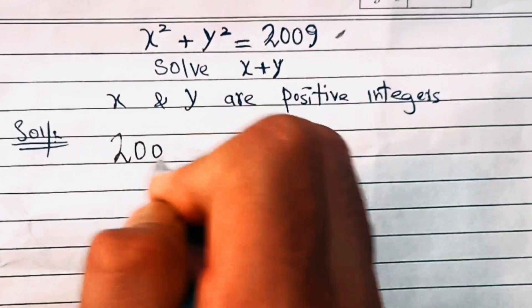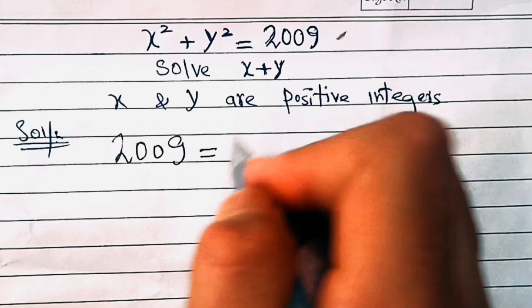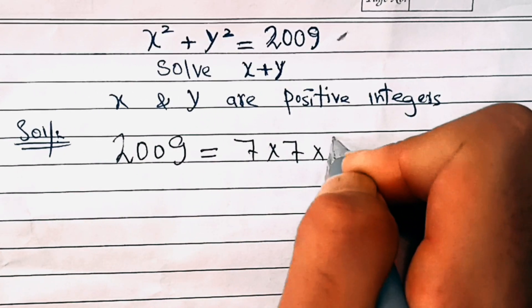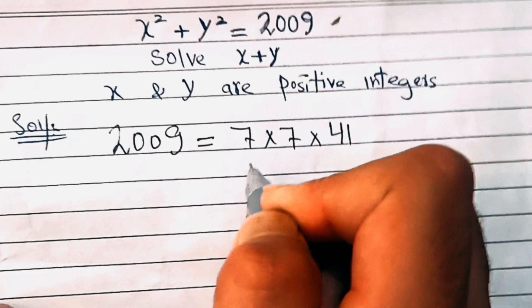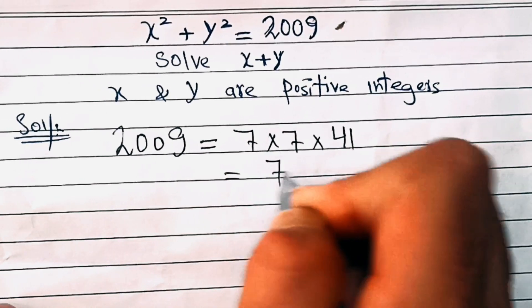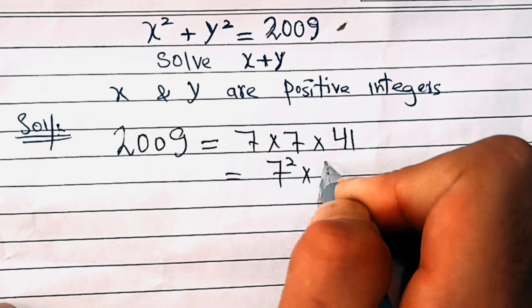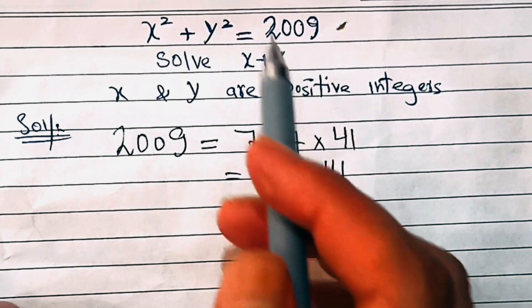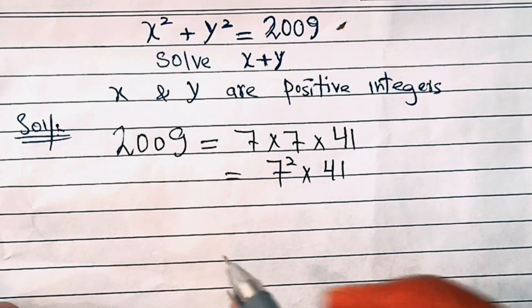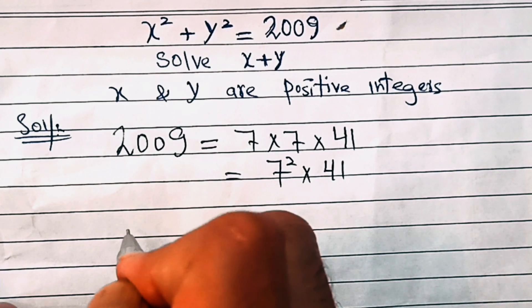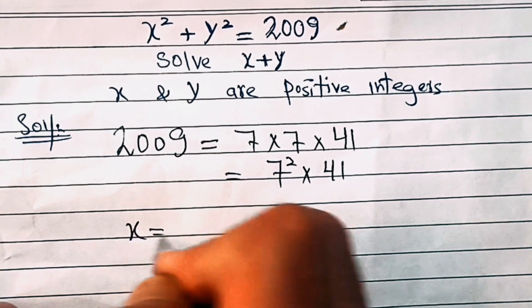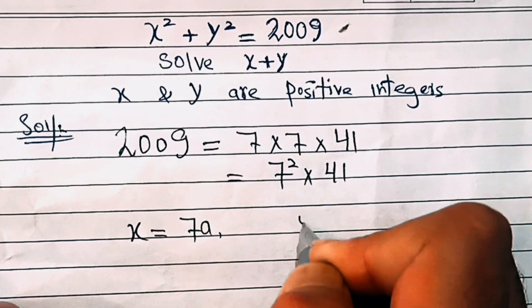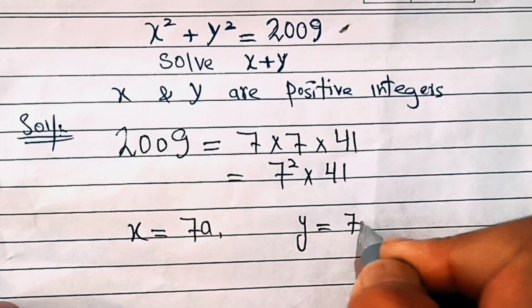This number is seven times seven times 41, that is seven square times 41. Now after this we will make some changes in this equation. Let's make x equal to seven times a and y equal to seven times b.